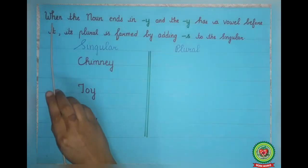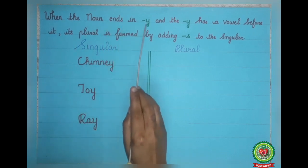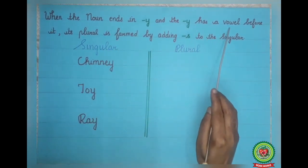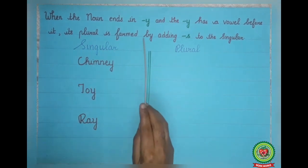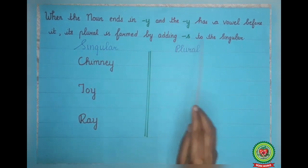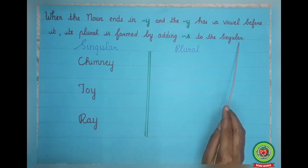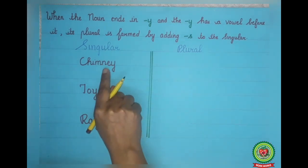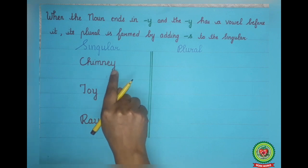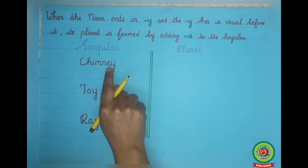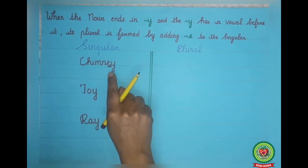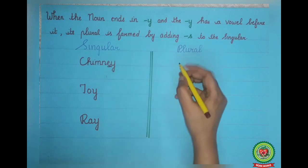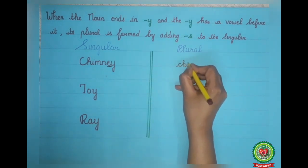Kids, keep one thing in mind: when the noun ends in Y and the Y has a vowel — that is, A, E, I, O, U — before it, its plural is formed by simply adding S to the singular noun. For example, chimney — the singular noun ends with Y but before Y, it has a vowel E, so the plural noun will be chimneys.